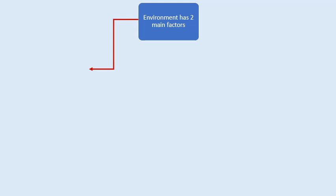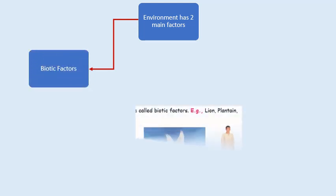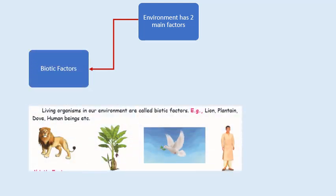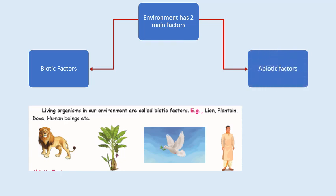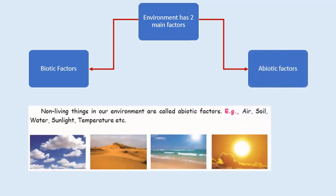This environment has two main factors. One is a biotic factor. When we talk about biotic factors, all living organisms in our environment are biotic factors, like lion, plantain, dove, human beings, etc. The second one is abiotic factor. Abiotic refers to non-living things in our environment, for example air, soil, water, sunlight, temperature, etc.